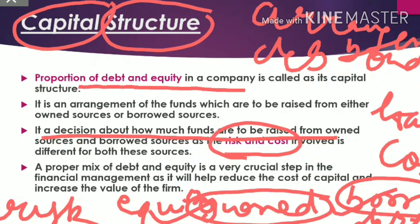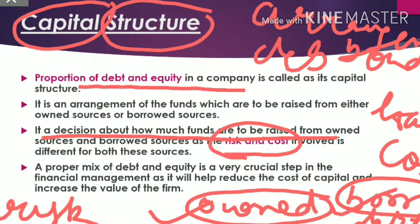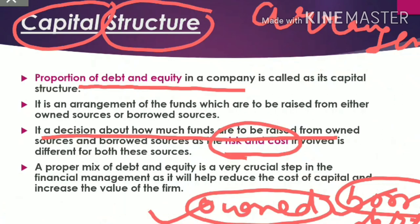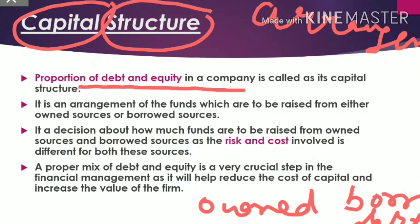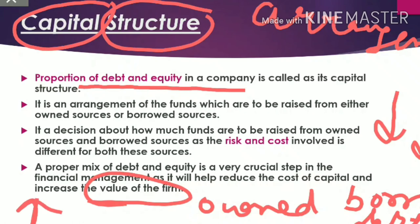If you have a loan, you have a repayment obligation, so there is more risk. But the cost is less in the case of debt because interest is less as compared to dividends on equity or preference shares. So here you balance cost and risk — raise the cost of capital, and the value of the company is maximized.